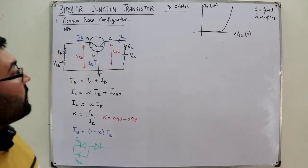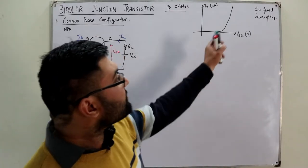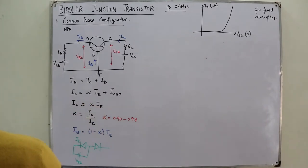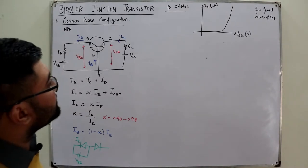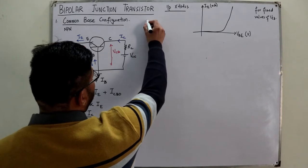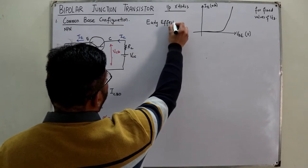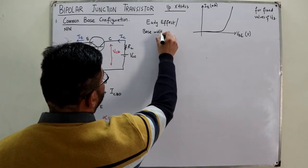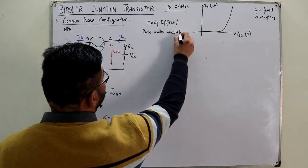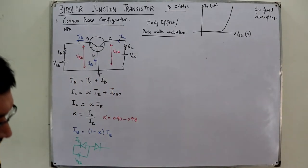If you change the output voltage VCB, it will have an effect on the input characteristics. To study this, we need to look at an effect called the Early effect, also called base width modulation.